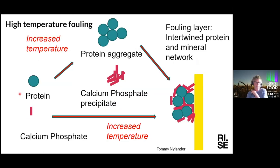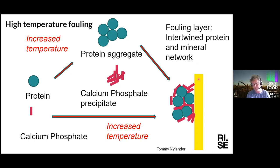This is an example from work I did together with Tommy Nylander, which is about high-temperature fouling. Imagine a steel plate in your process equipment — you can get fouling, as we heard earlier today. The fouling is very much dependent on its time history. In this project, we were interested in high-temperature fouling, which is much more crystalline and solid than fouling formed at lower temperatures. In principle, it's protein and calcium phosphate that precipitates and aggregates on the surface.